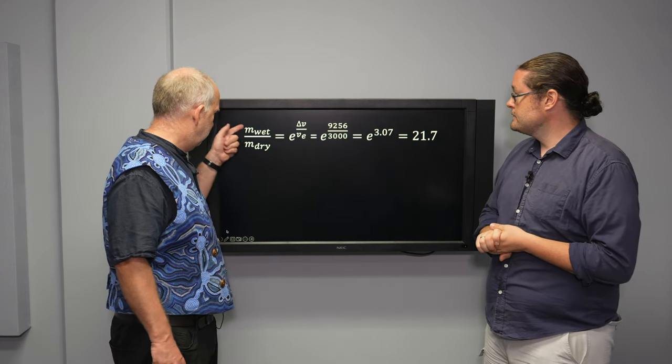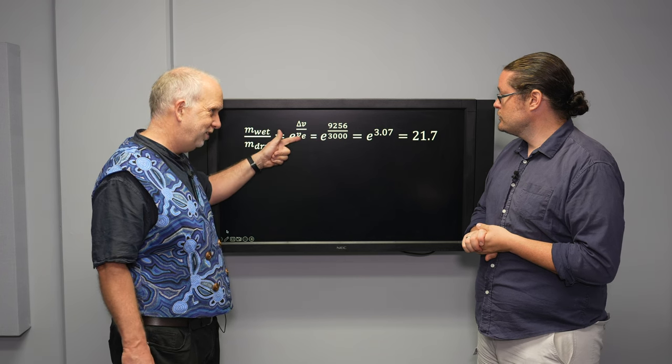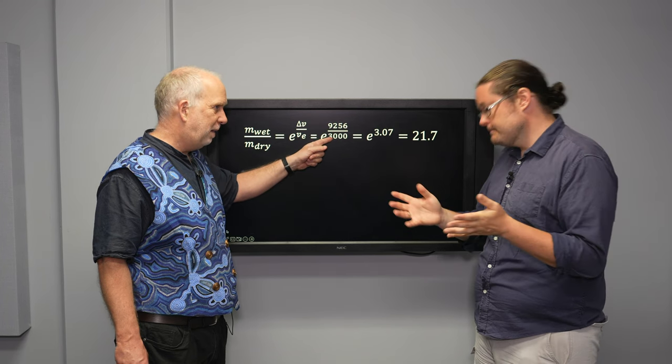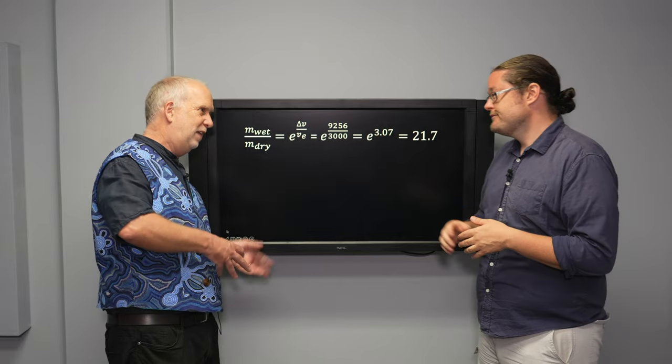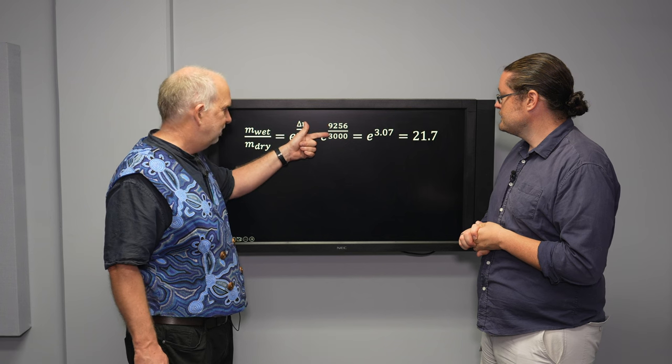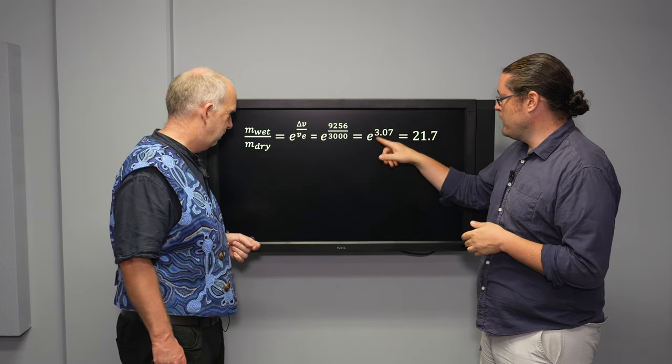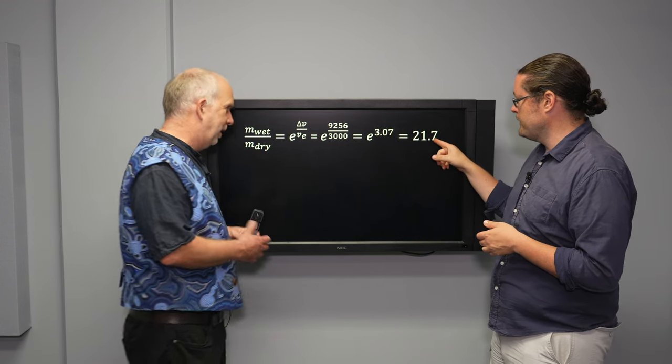That's our VE, and our delta V we needed was about 9 kilometers per second. So if we go to the equation, the ratio of the masses equal to the exponent of the ratio of the velocities. The ratio of the velocities is the delta V we need, 9256, divided by what SpaceX will produce, which is about 3,000. That divided by that, put in your calculator, is 3 and a bit. So our wet to dry mass ratio is E to the 3.07, which is 21.7.